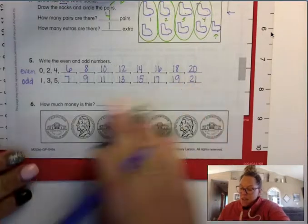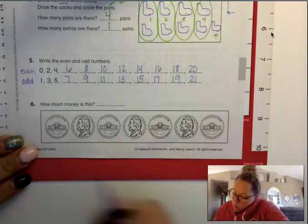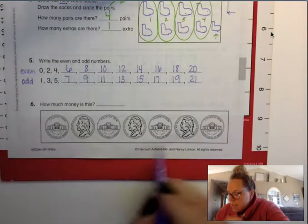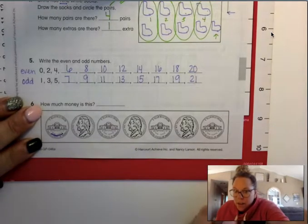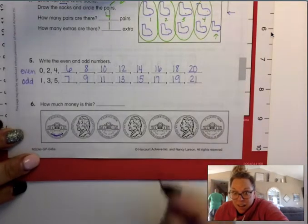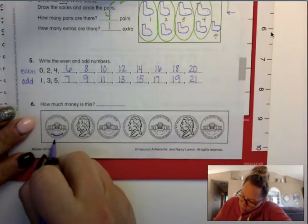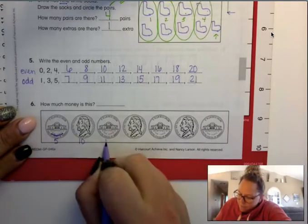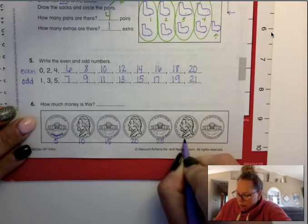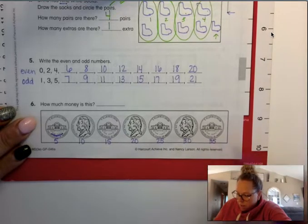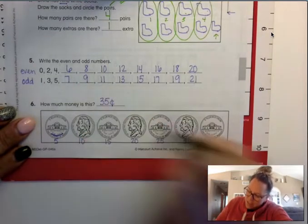Now number six says, how much money is this? So we need to count. And if I'm looking, oh, this is part of our new lesson today, isn't it? We are talking about the nickel today, and those are each worth five cents. Those are all worth five cents. So here we go: five, ten, fifteen, twenty, twenty-five, thirty, thirty-five. So how much money is it? Thirty-five cents.